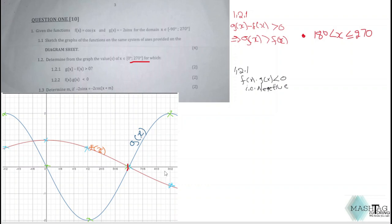That means from 0 all the way to 270°, which is the domain we are dealing with, the product of the two graphs will give you a negative. You can represent it like this where you say 0 < x < 270°, the product of f(x) and g(x) is less than zero.